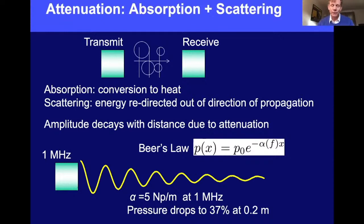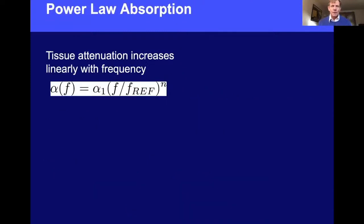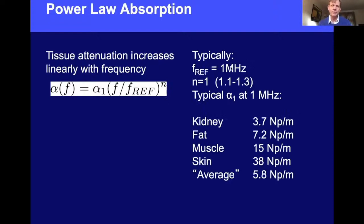A typical value at one megahertz in soft tissue is an absorption coefficient alpha of five nepers per meter, which means the pressure will drop to 1/e or 37% at 0.2 meters (20 centimeters). This effect is frequency dependent: tissue attenuation increases normally linearly, or at least with a power law. The common formula is alpha(f) = alpha_1 × (f / f_ref)^n, where the reference frequency is typically one megahertz and n is most commonly taken as one.